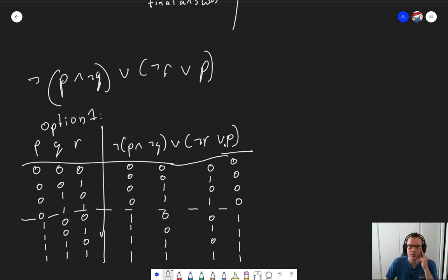And now we start with the innermost operators. That's this negation and this negation. So not Q becomes this. Not R becomes this. The second innermost is this AND and this OR. So for the AND, we're looking at these two columns. 0 0 0 0 0 1 1 0. This OR, we're looking at this one and this one. Next up is this negation. And it's the negation of this column. So it's 1 1 1 1 0 0 0 1 1.